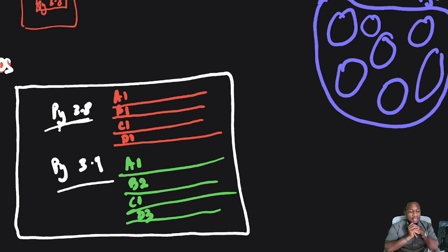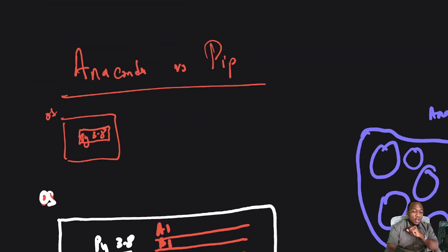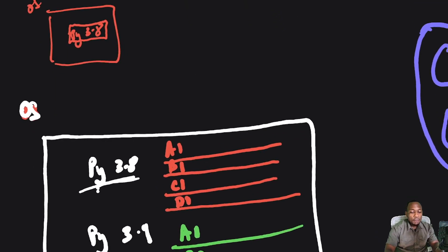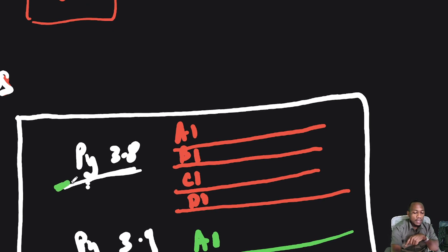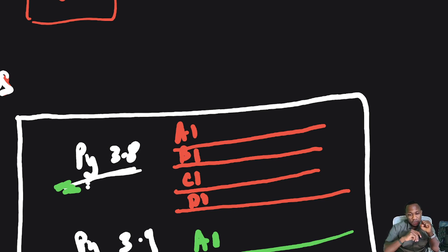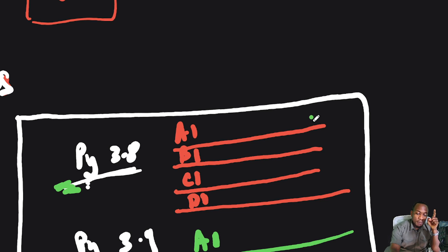This is not something you can keep track of yourself just by looking at it, and this is where environment managers and package managers come into play — which brings us back to our topic of Anaconda versus pip. What is pip going to help you with? Pip — the long form is Python Install Package — is a Python package installer. If you have one version of Python installed on your machine, you can use pip to install packages: pip install this package, pip install that package.